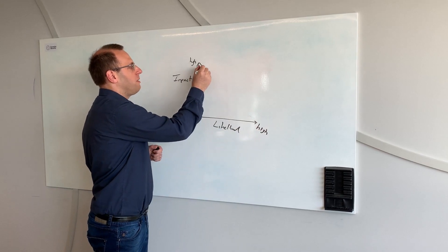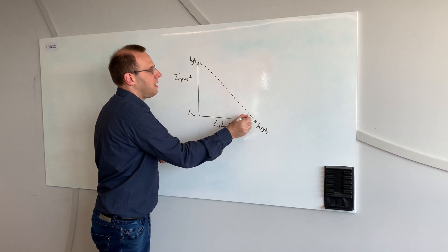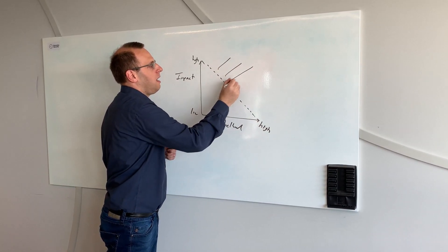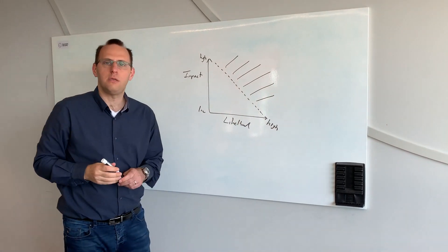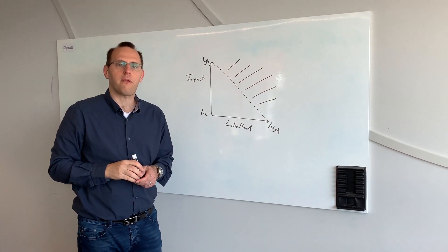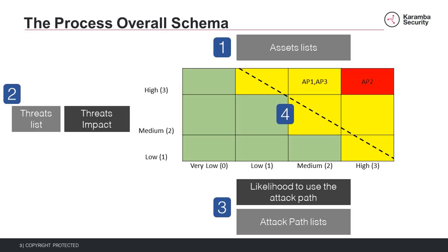The threats that get a score above this line, in this area, are the threats we want to understand and mitigate during our design and development process. The TARA process contains four phases. In step one, we will list all the relevant assets of the software — any resource or value of interest: data types, communication channels, functionality.